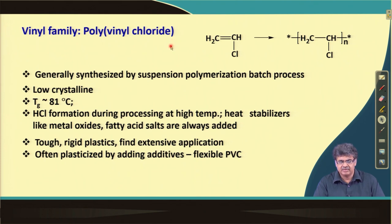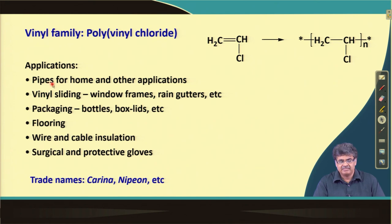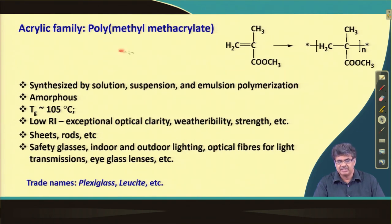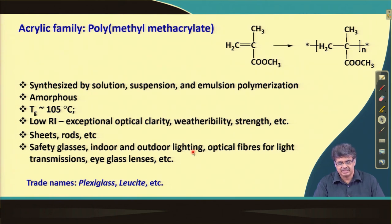Other polymers like polyvinyl chloride (PVC) are also synthesized by radical chain polymerization — black pipes for drainage are made of PVC, and it is also used for flooring and packaging. An important polymer in the vinyl family is polymethyl methacrylate (PMMA), which has a very low refractive index giving it very high transparency. It is used for safety glasses, indoor and outdoor lighting applications, and optical applications where transparency or clarity is needed. Common trade names include Plexiglass and Lucite.